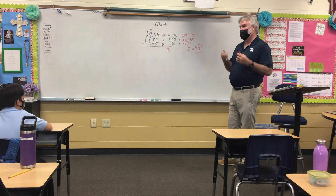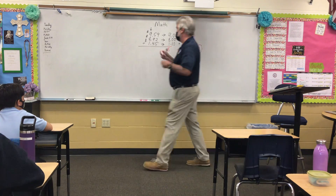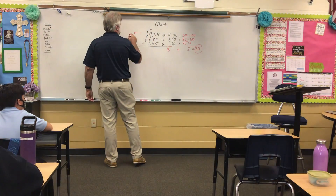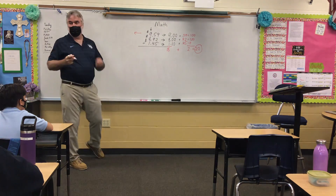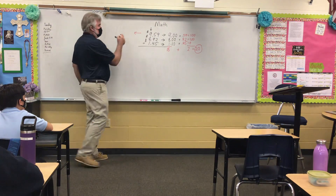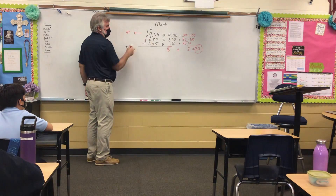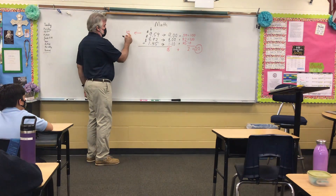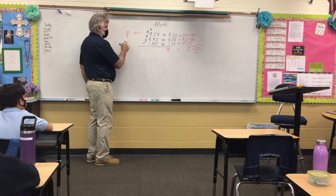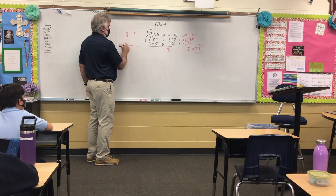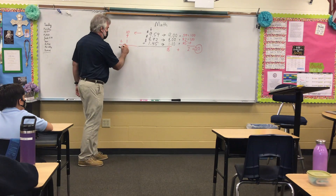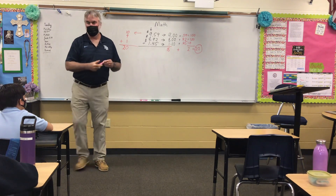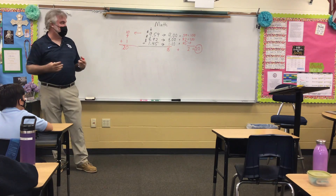Now, if I did it with rounding — I'm going to go the other way for rounding. This would round to $10. This would round to $10. This one would round to $9. And this one rounds to $1. $1 and $9 is $10. $10 and $10 is $20. You both get the same answer.